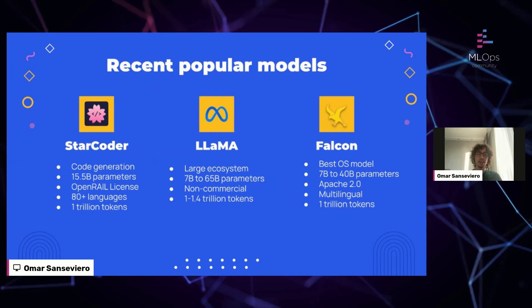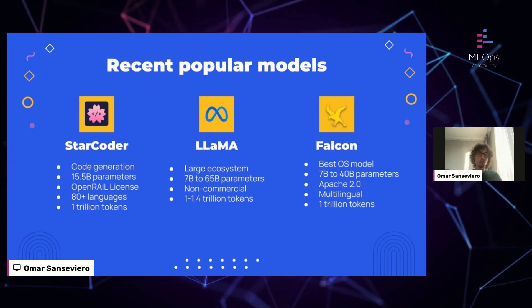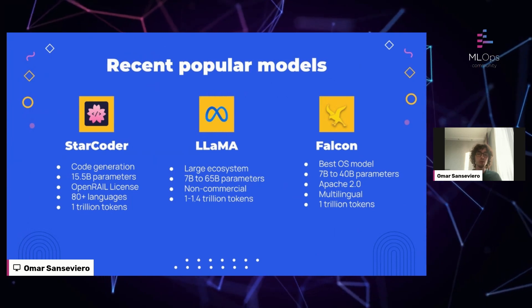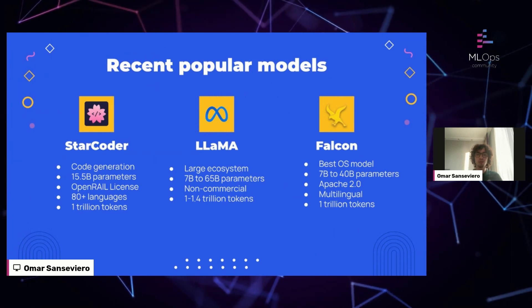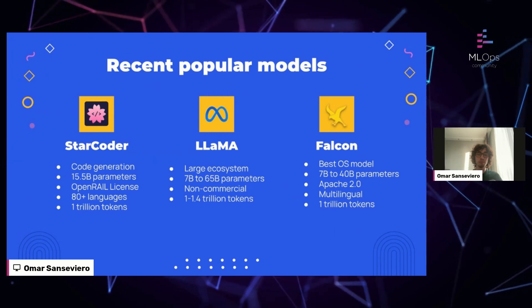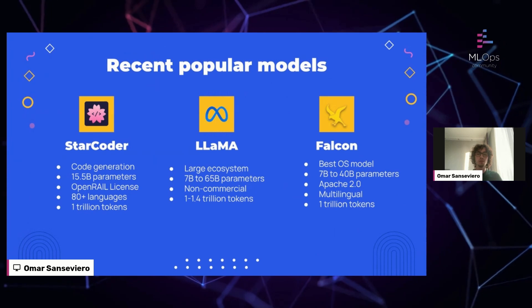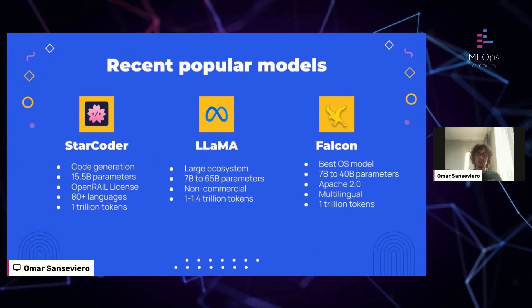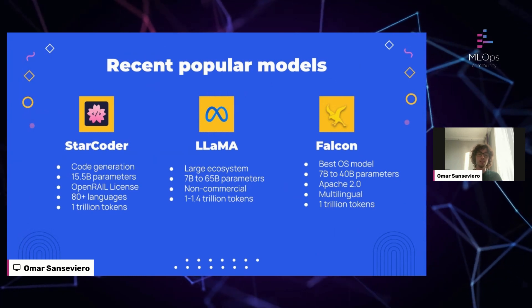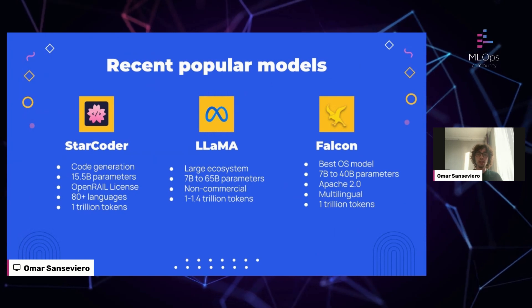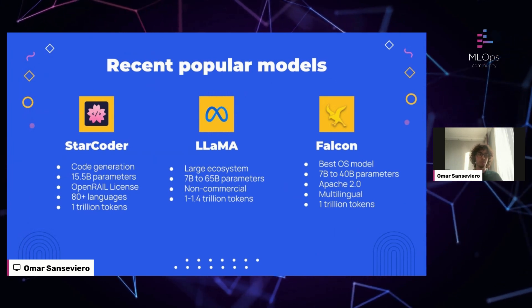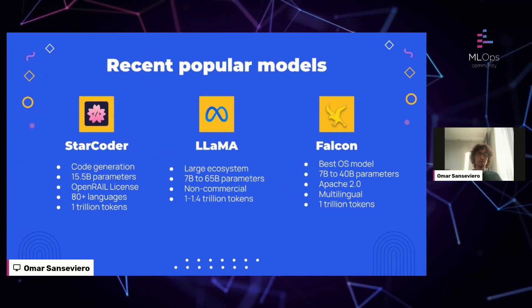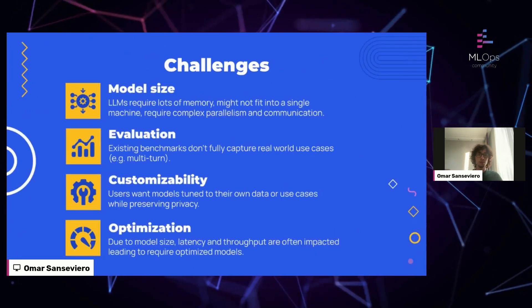If you've been looking at Twitter this year, every few weeks there are new exciting models. In this slide I put three examples of popular recent models. StarCoder on the left is an open-source community-led Copilot replication — a model that can generate code for many different programming languages. There is LLaMA by Meta, which has spawned a great number of tools and research, including LLaMA.cpp, a C++ version. Two weeks ago there was Falcon, considered right now the best open-source LLM. These models range from 7 billion up to 65 billion parameters.